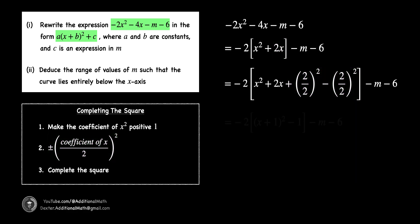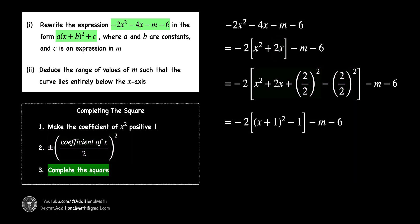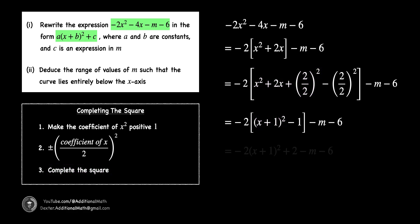Let's complete the square by merging the first three terms in the bracket to give us the square of x plus 1. Next, we will multiply negative 2 with negative 1. Lastly, by taking 2 minus 6 to be negative 4, we will have the answer to the first part to be negative 2 times the square of x plus 1 minus m minus 4.